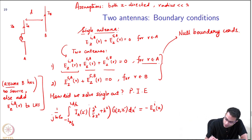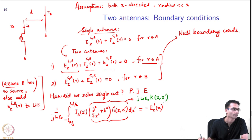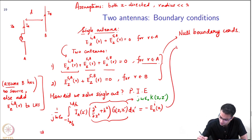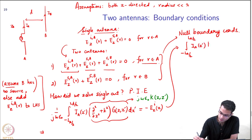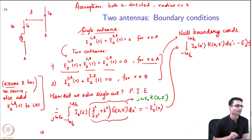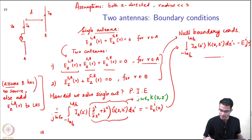This character over here is going to appear many many times, so I am going to make a shorthand notation for it. This term over here I am going to call it jωε₀ times k(z,z'), just a shorthand notation for this term. What happens now? This will become integral from -L_A/2 to L_A/2, then I_A(z') k(z,z') dz' = -E_z^i(z), just a more compact way of writing the same equation.